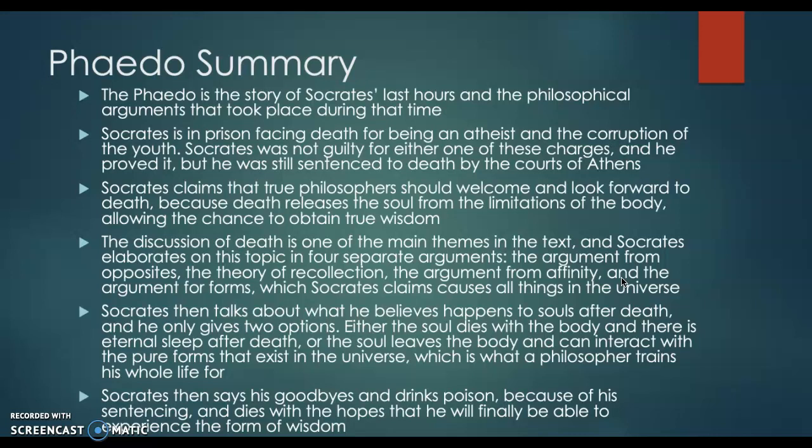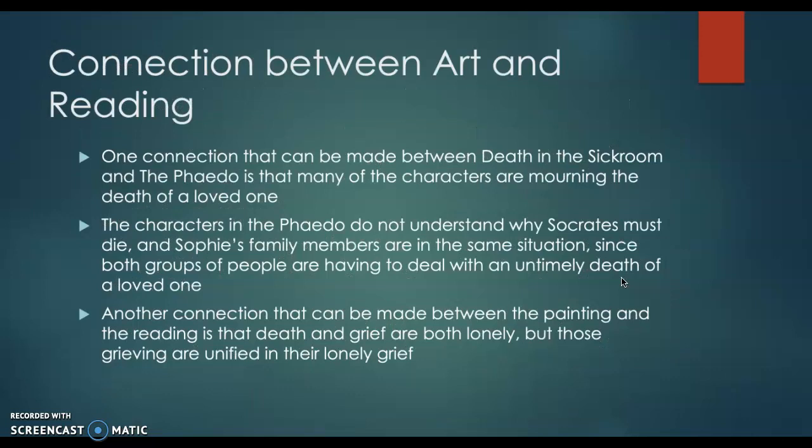The fourth argument is the argument for forms, which Socrates claims all things in the universe come from. He talks about forms of wisdom, forms of beauty, strength — all the things that are invisible to the body's eye are the forms. Socrates then talks about what he believes happens to souls after death and gives us two options: either the soul dies with the body and there is eternal sleep after death, or the soul leaves the body and can interact with the pure forms that exist in the universe, which is what a philosopher trains his whole life for. Socrates then says his goodbyes, drinks the poison he was sentenced to, and dies with the hopes that he will finally be able to experience the form of wisdom.